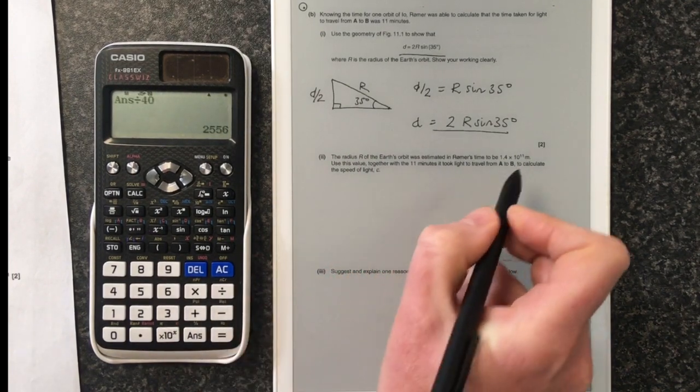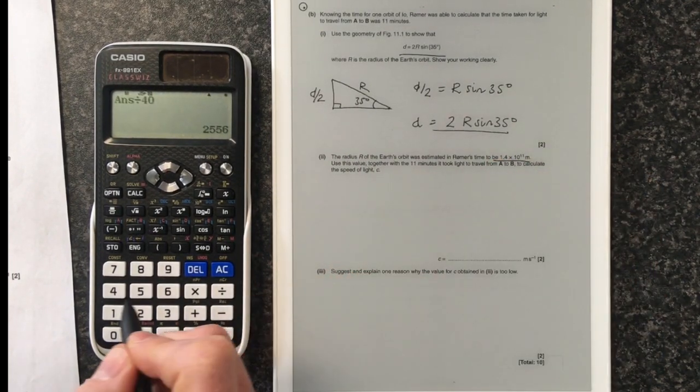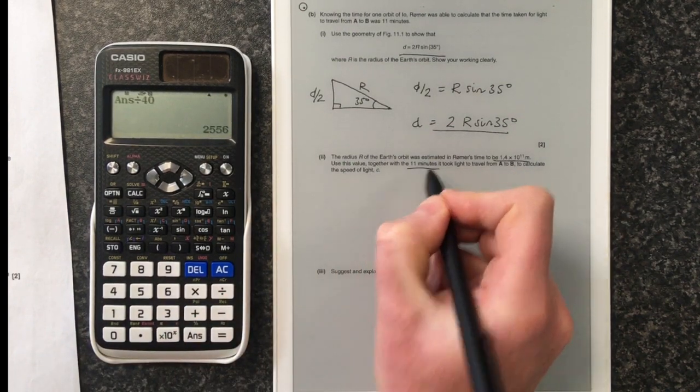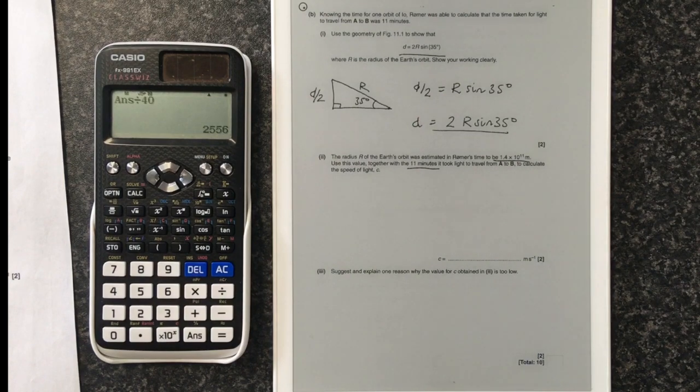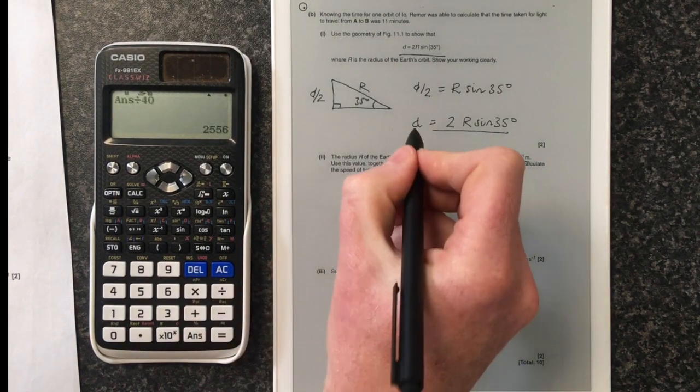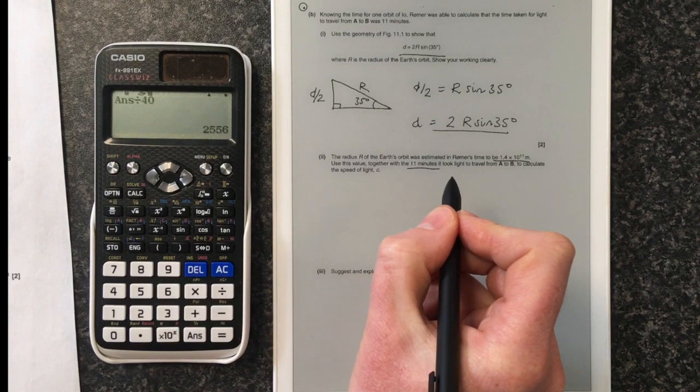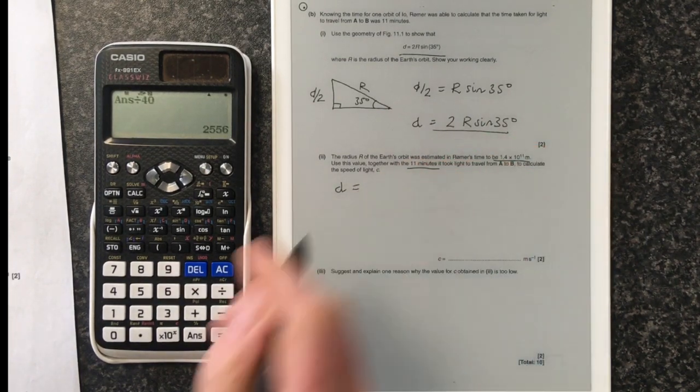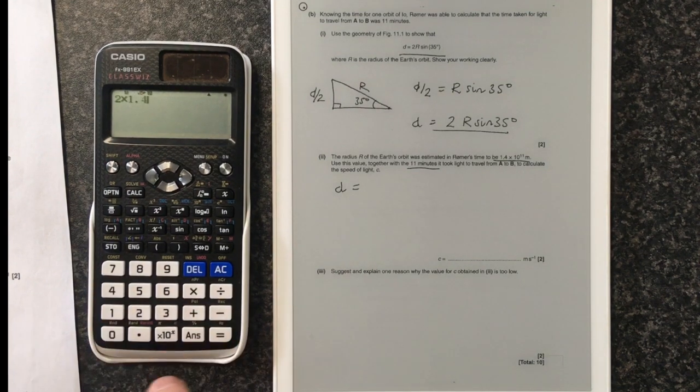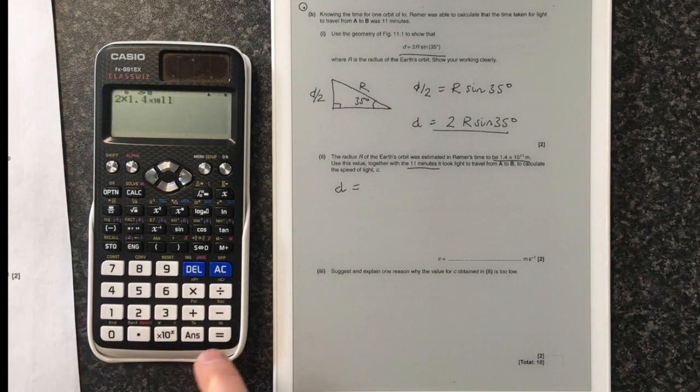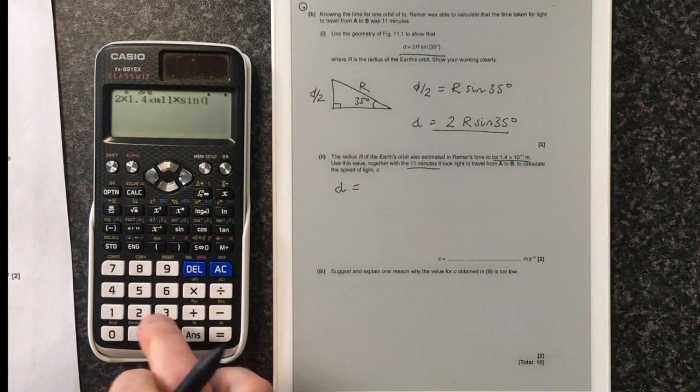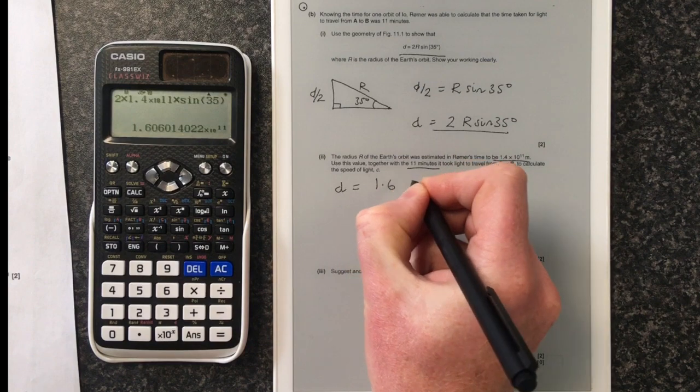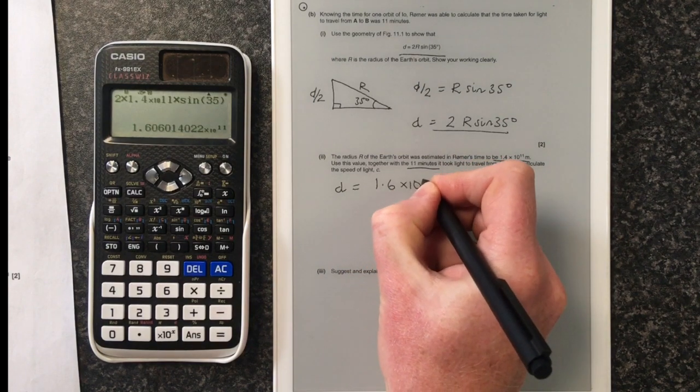Now they're giving us the numbers. So we've been told that the radius is this. We've been told that the time it took to travel from A to B is 8 minutes. So what do we do now? We want to work out D. So let's do that first. So D is going to be 2 times 1.4 times 10 to the 11 times the sine of the angle. So D is 1.6 times 10 to the 11 meters.